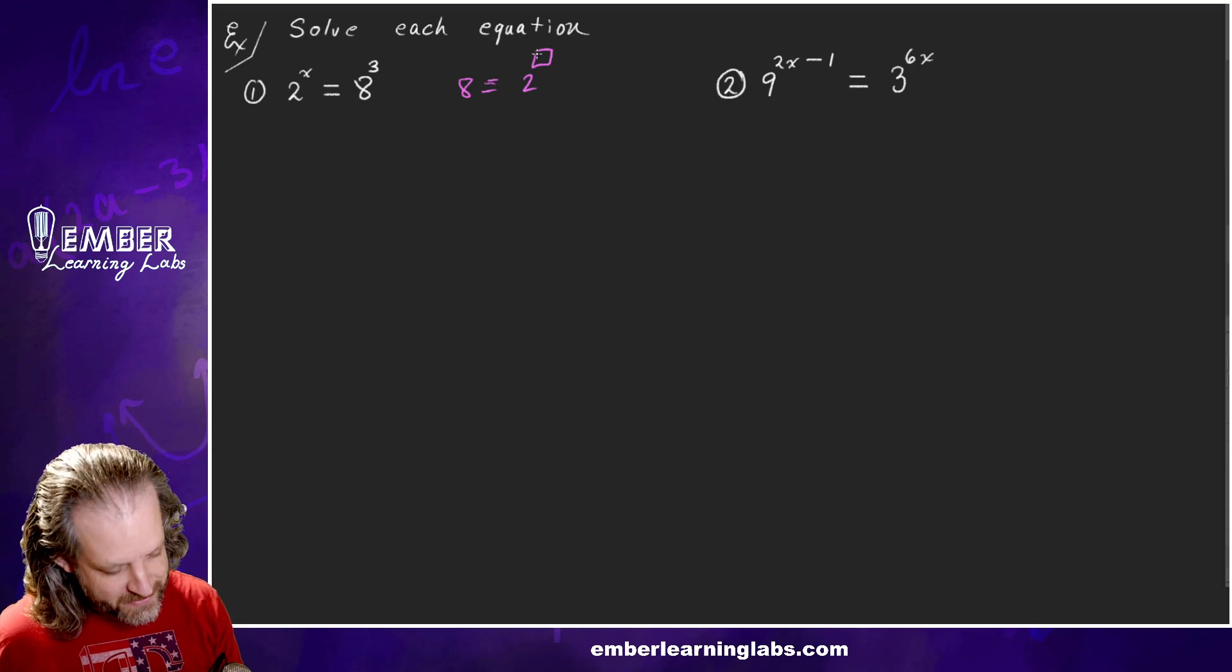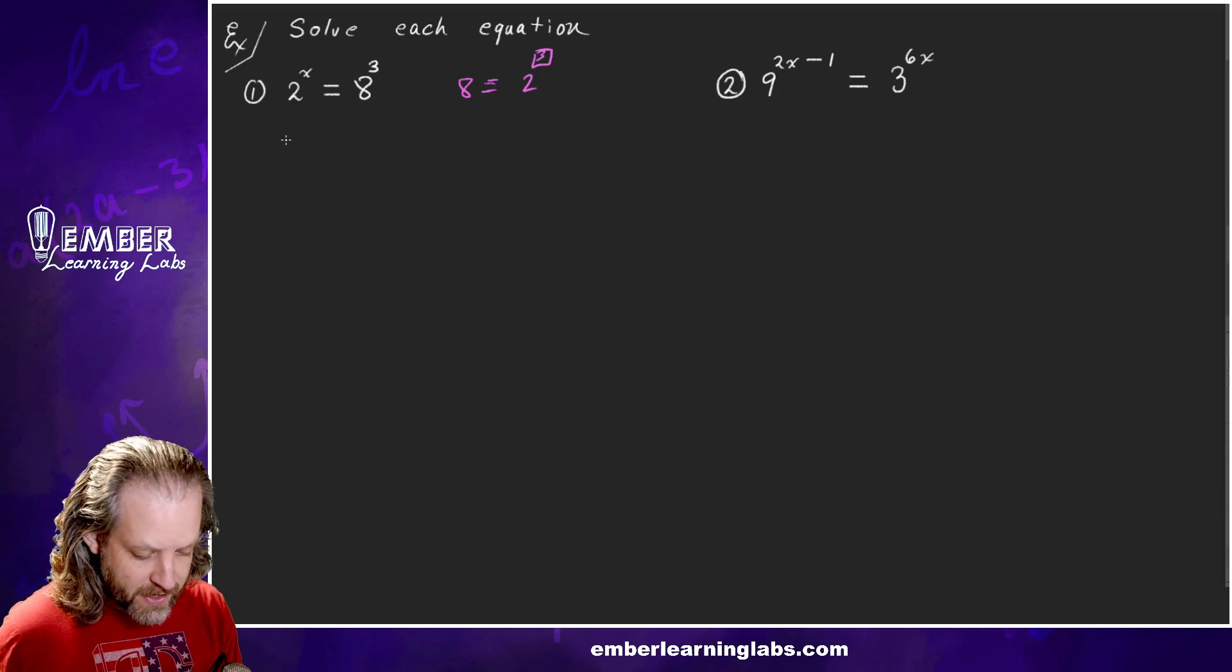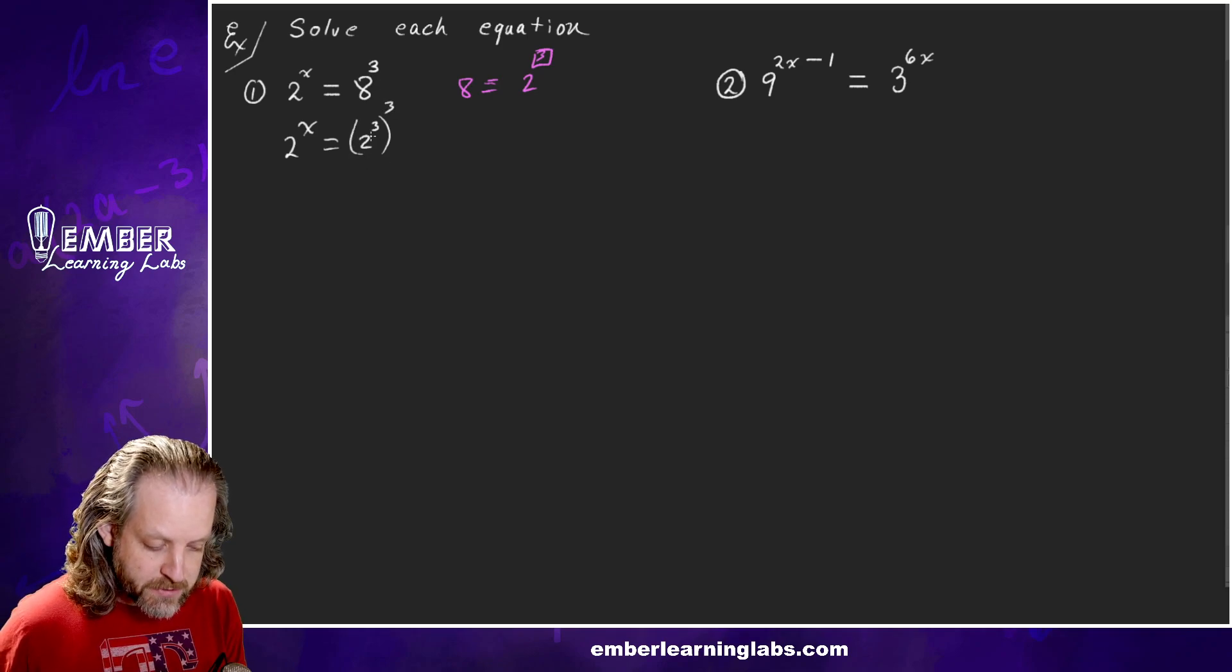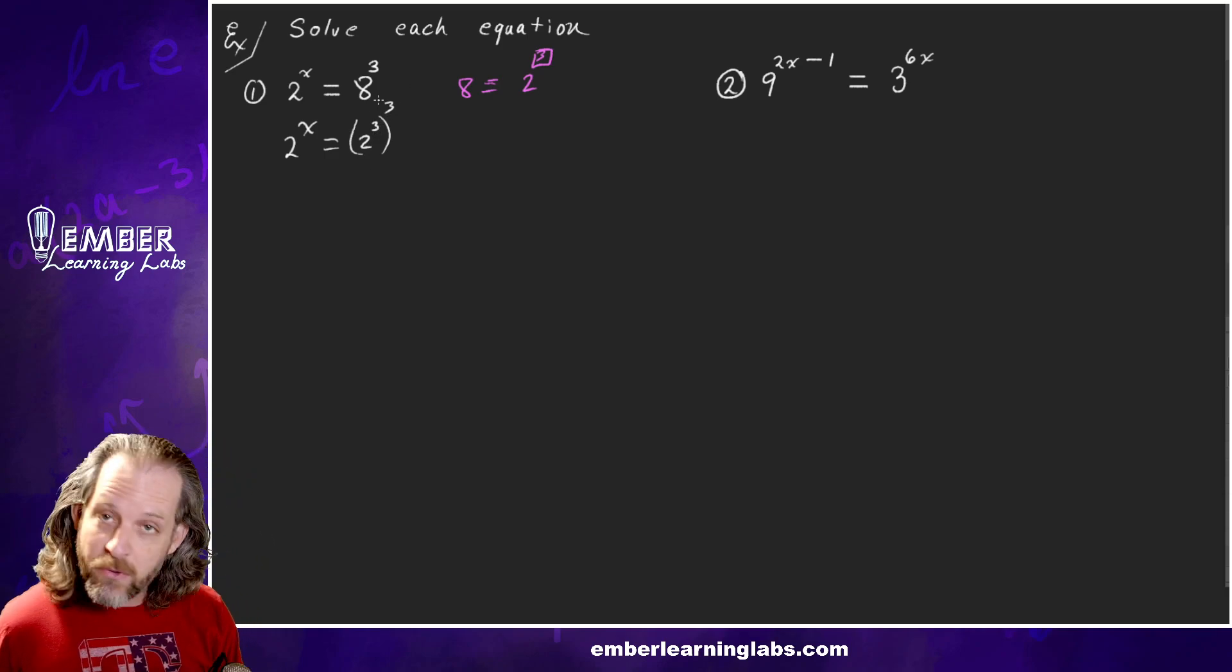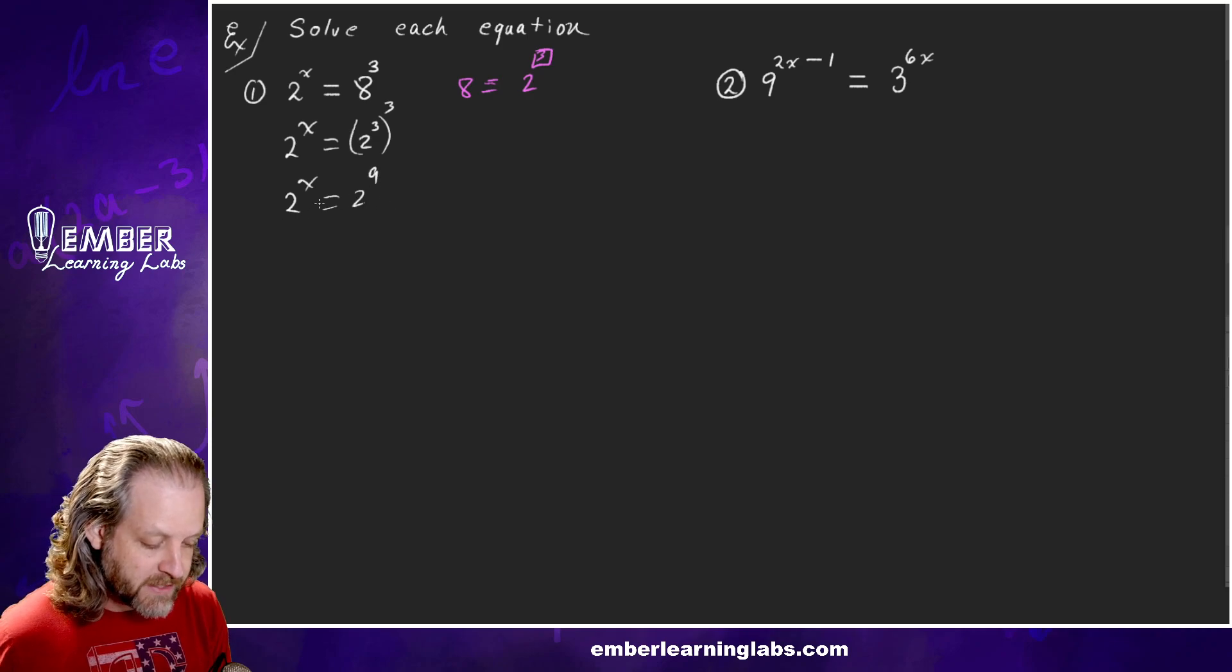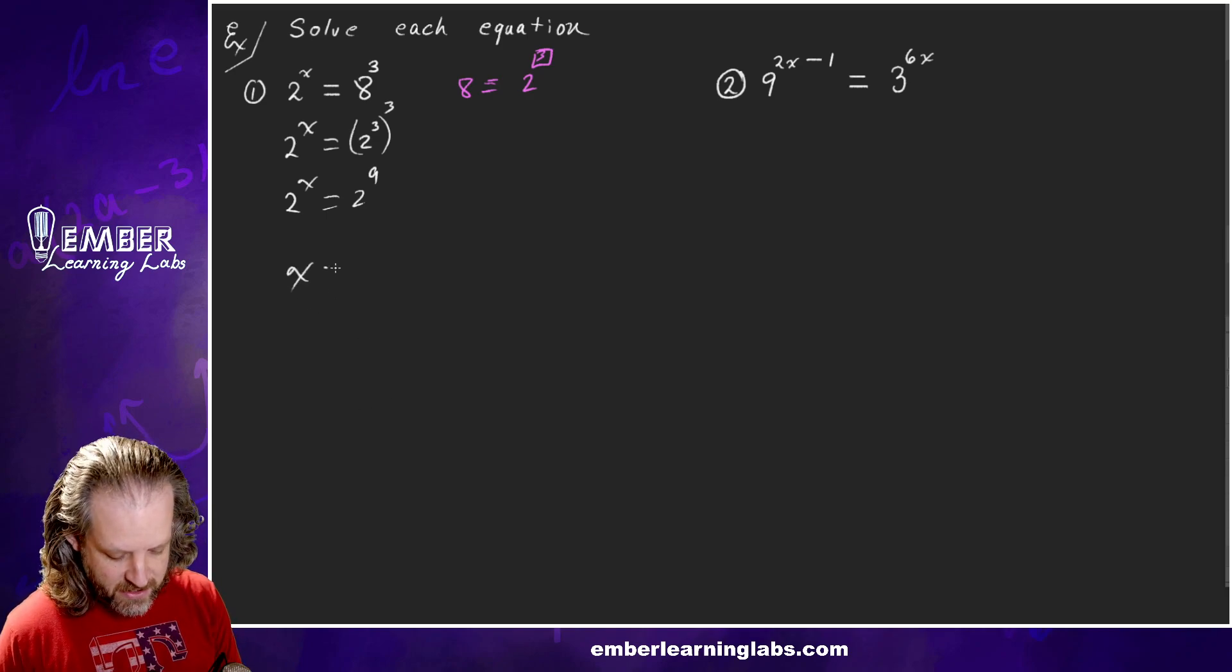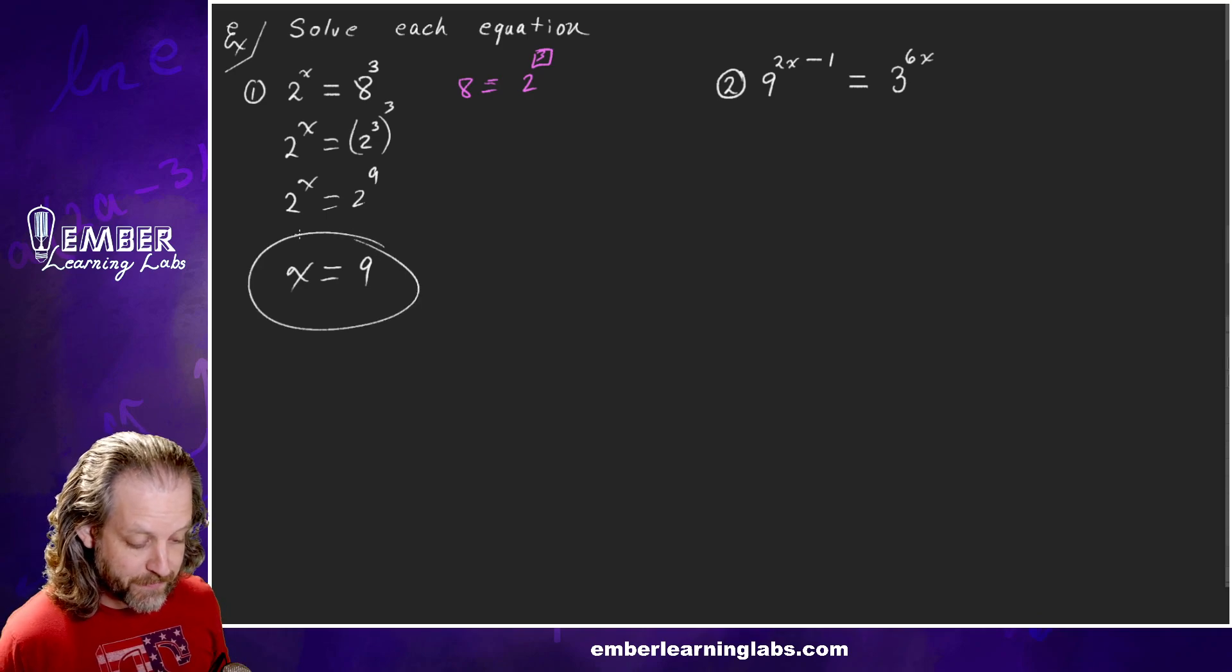So we can turn this 8 into 2 cubed. That would turn this equation into 2^x = (2^3)^3, because 8 is 2 cubed, and then we still have this cubed. Now we've got a power to a power. What do we do with those? We multiply them. So 3 times 3 is 9. This turns into 2^x = 2^9. Now the bases match, so we just set the exponents equal to each other. So in this first example, x equals 9.